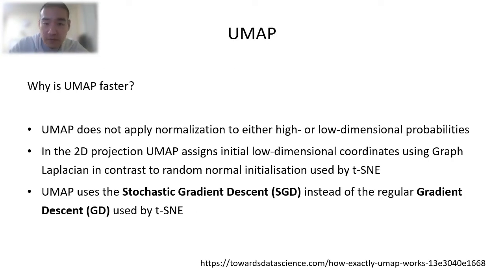Here we will look at the differences between t-SNE and UMAP and see why UMAP is faster. First, UMAP doesn't apply normalization to either high or low dimensional probabilities. This dramatically reduces the computational cost, especially in the high dimensional space. Secondly, UMAP uses a graph Laplacian to assign initial locations for mapped data points, rather than random initializations like t-SNE. This creates a rough estimation of mapped data points. This can save some time. And another point is UMAP uses stochastic gradient descent, SGD, rather than gradient descent.